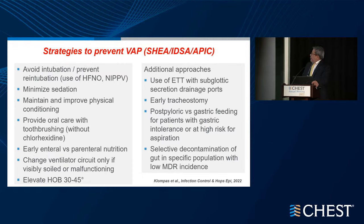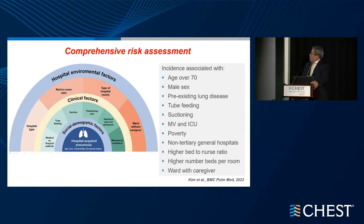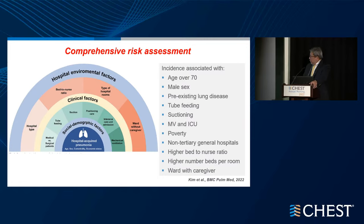Changing the circuit, elevating the head of bed, and additional approaches are mentioned on the right. Selective decontamination of the gut is really not used in the U.S., especially in this population — it's used more in Europe where there's reportedly lower incidence of MDR organisms. A study looked at the incidence of hospital-acquired pneumonia associated with older age, male sex, pre-existing lung disease, tube feeding, suctioning, and mechanical ventilation, but also highlighted higher risk in non-university general hospitals, higher bed-to-nurse ratios, higher numbers of beds per room — especially during COVID — and settings where caregivers are with patients.